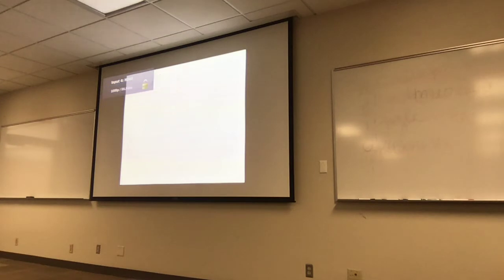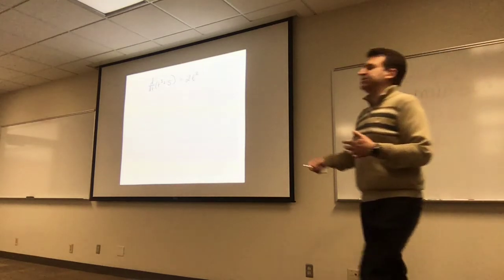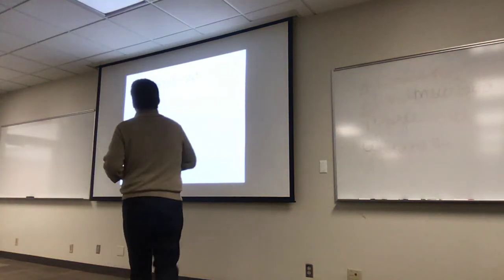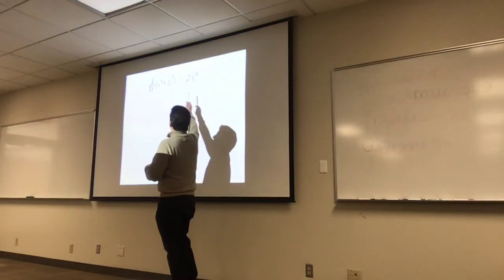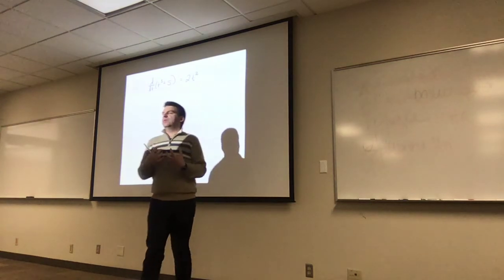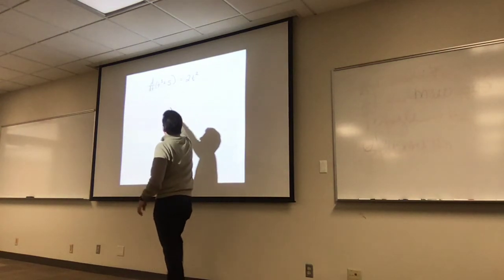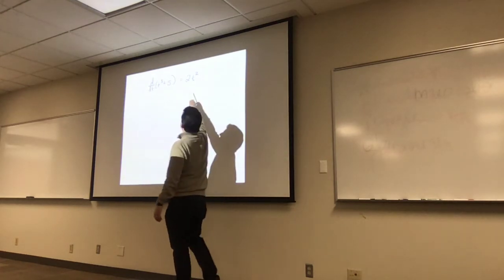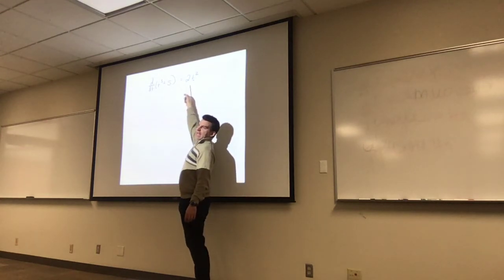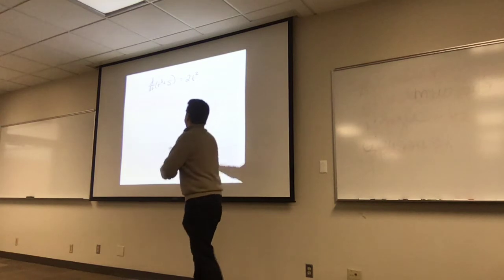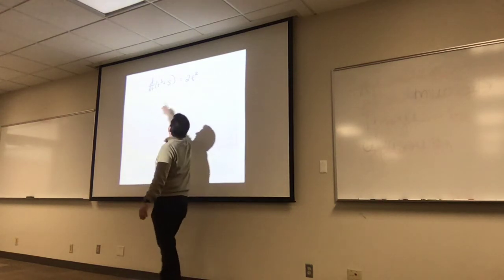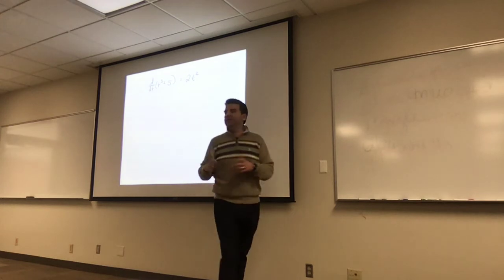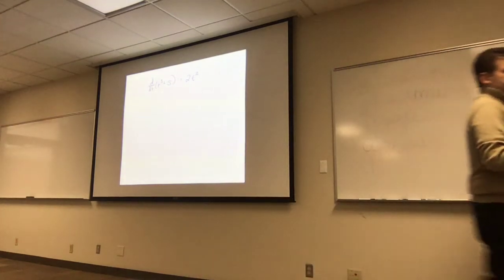The derivative of t cubed plus 5 is 3t squared. That seems very mechanistic — you just learned to follow a rule. But hopefully by the end of the course, you'll have a more conceptual understanding of what's going on: if this is the quantity, say the number of people that hold a particular idea, then this derivative represents how many people are gaining or losing that idea — how quickly that quantity is changing.